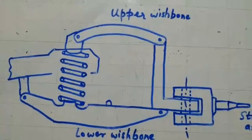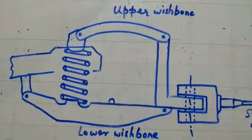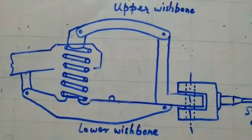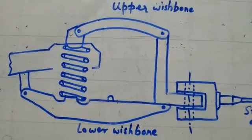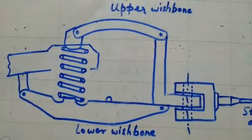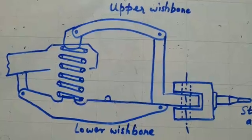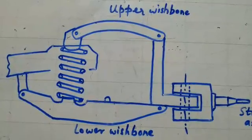So this was wishbone type suspension, the simplified drawing. You can have a look at the other drawings which will show how it looks but this is only for explanation purpose.